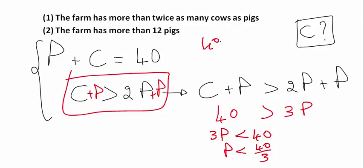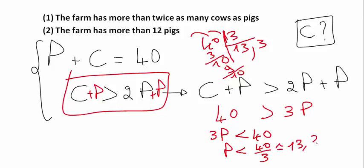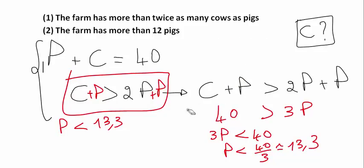So 40 divided by 3, if I can do it quickly. 1 times 3 is 3. I put 0 here, so here 3, 3 times 3 is 9, then I have 1, then I put a comma, and then 0, and then 3. So 40 divided by 3 is approximately 13.3. So I know here that P is less than 13.3. So this is my conclusion of the first statement.